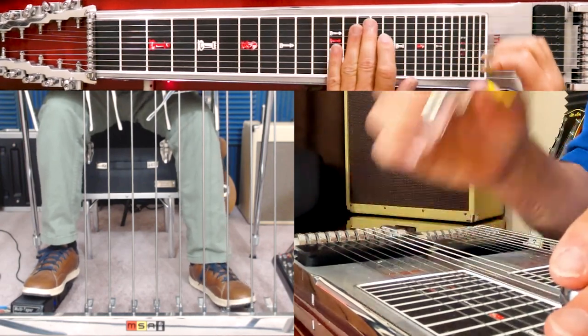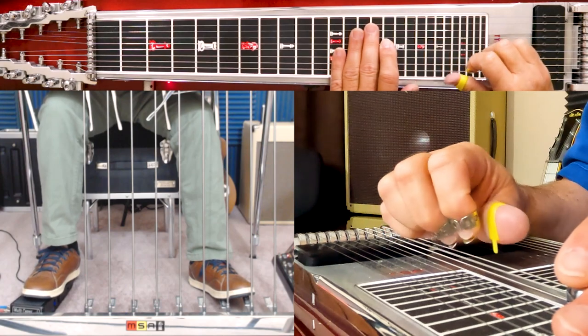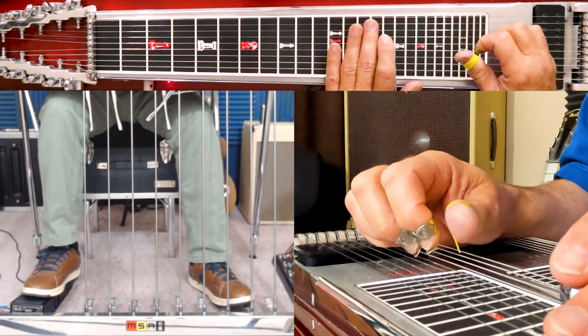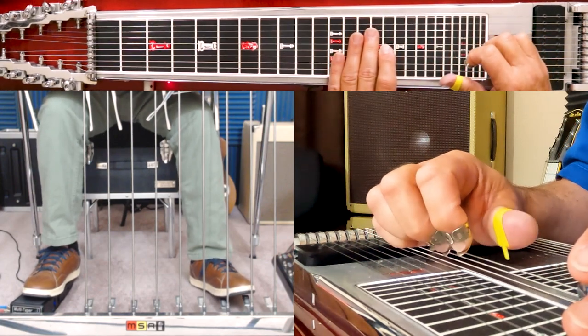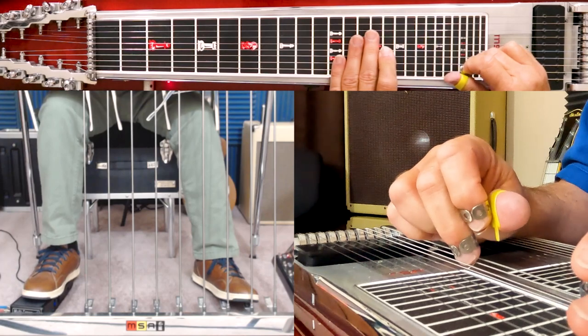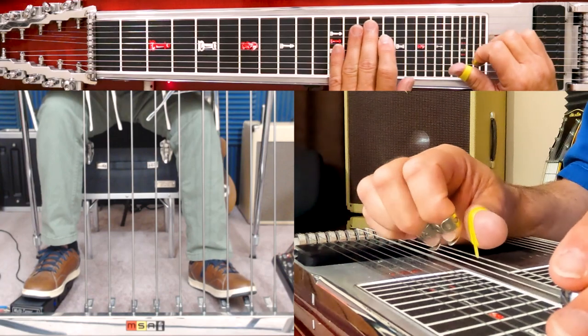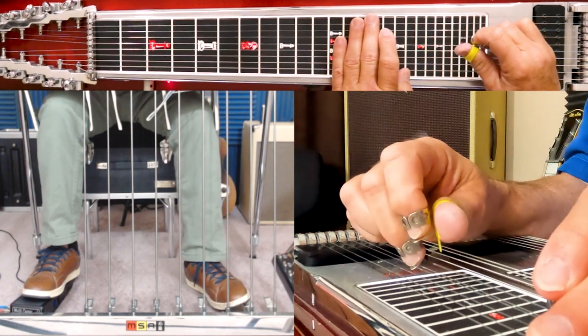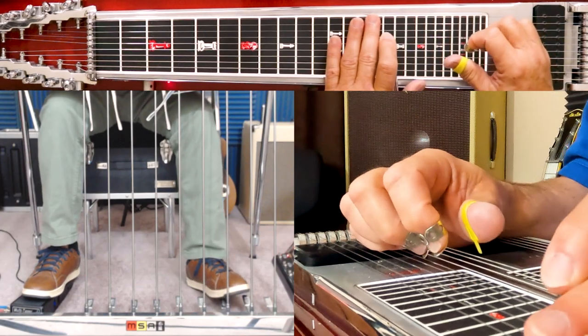Then it ends on a C chord. We do the same one we've done before. That's 6 with the B pedal down, 6 no pedal, 7, 8, 9, 10 with the A pedal down. Then the little ending licks I did was 7, 8, 5, then 6 with the B pedal down. And that's over the C chord.